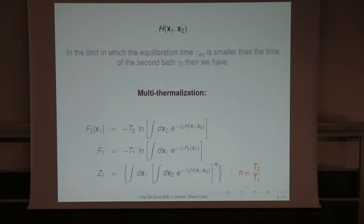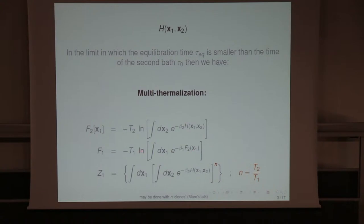You have two types of variables. The first ones are in contact with the fast bath — they do everything they have to do with the fast bath at temperature T2. From here you get a free energy which acts as a potential to the slower bath. Note that X1 is here just a parameter that is moving very slowly, and if you can assume all these things, the system tends to this form.